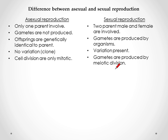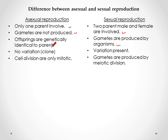Now we will see the differences between asexual and sexual reproduction. Only one parent is involved in asexual reproduction, whereas two parents — male and female — are involved in sexual reproduction. Gametes are not produced in asexual reproduction, whereas gametes are produced in sexual reproduction. Offspring are genetically identical to their parents in asexual reproduction, whereas in sexual reproduction, variation amongst the offspring can be seen.